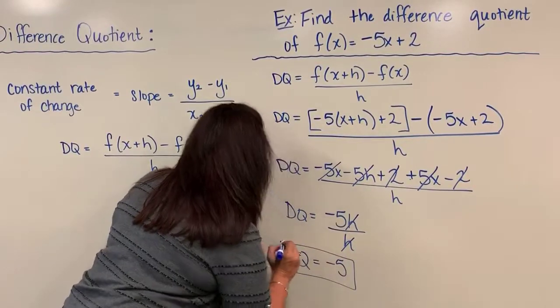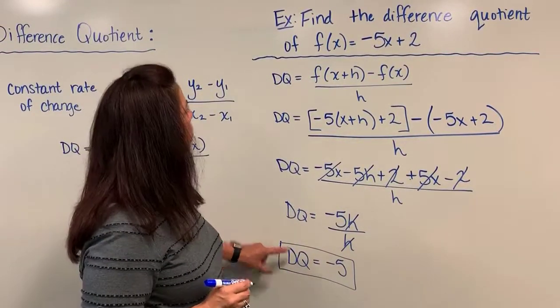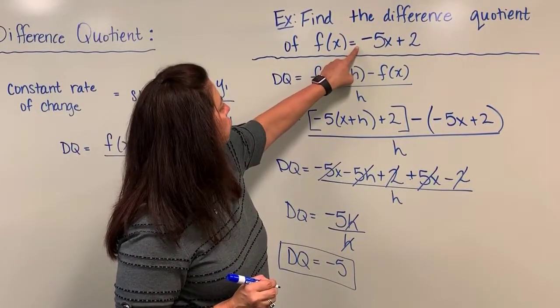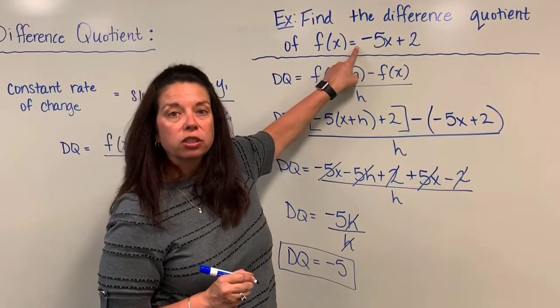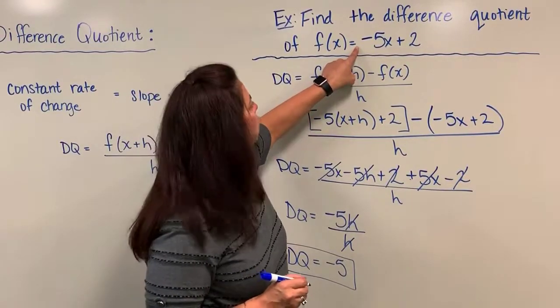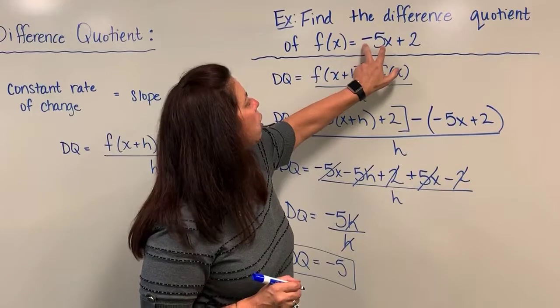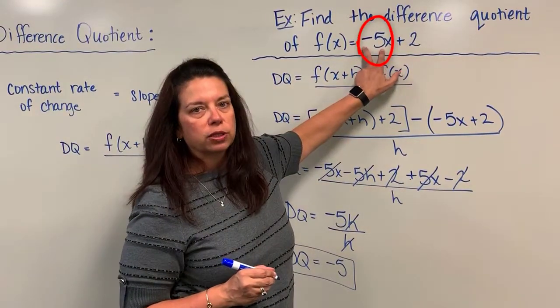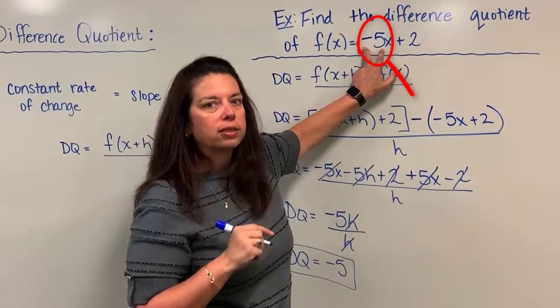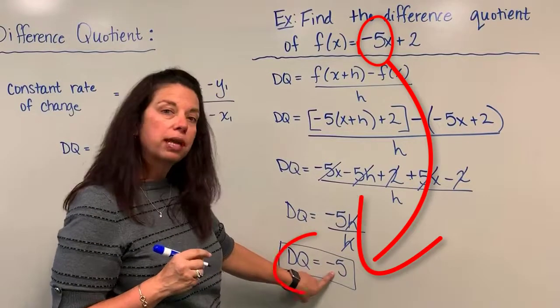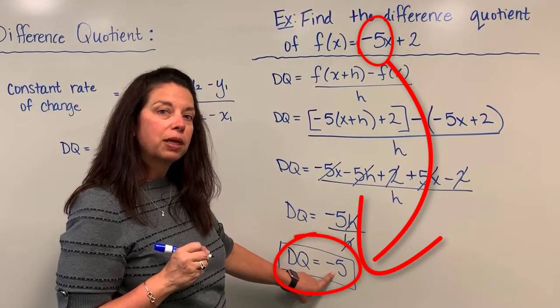Now here's what's really interesting about this particular one. We notice if we go back to our original function, we know that that was a linear function to begin with, and if you look closely you will recognize that in fact the slope of that linear function was a negative 5, and it was no coincidence that we actually ended up with an answer for the difference quotient being negative 5.